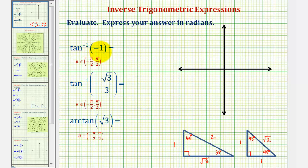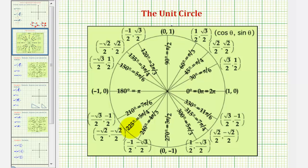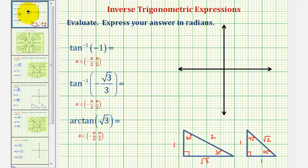For inverse tangent of negative one, we're looking for an angle in this open interval that has a tangent function value of negative one. When evaluating inverse trig expressions involving inverse sine or inverse cosine, the unit circle is often very helpful because x equals cosine theta and y equals sine theta. But tangent function values on the unit circle equal y divided by x, making it much more difficult to identify the angle. So for our examples here, we'll use reference triangles: a 30-60-90 and a 45-45-90 reference triangle.